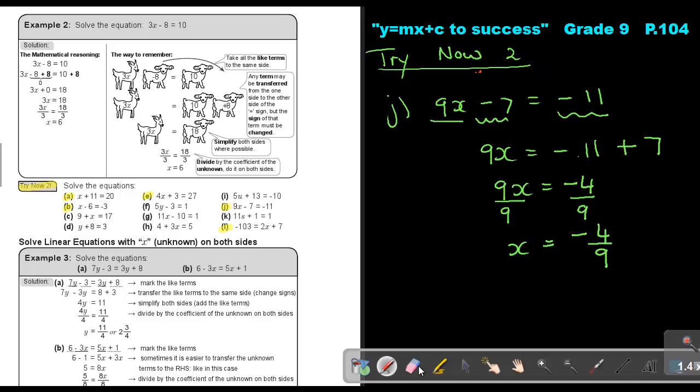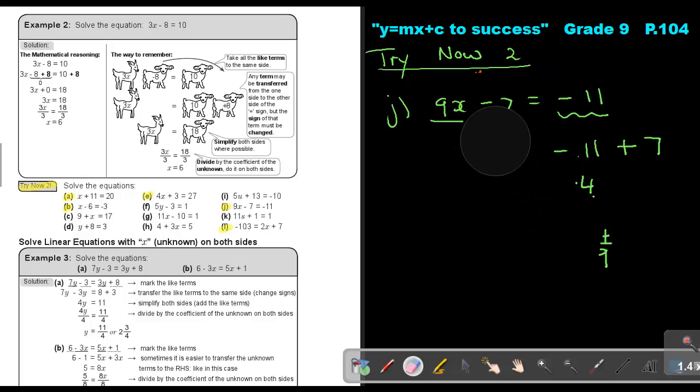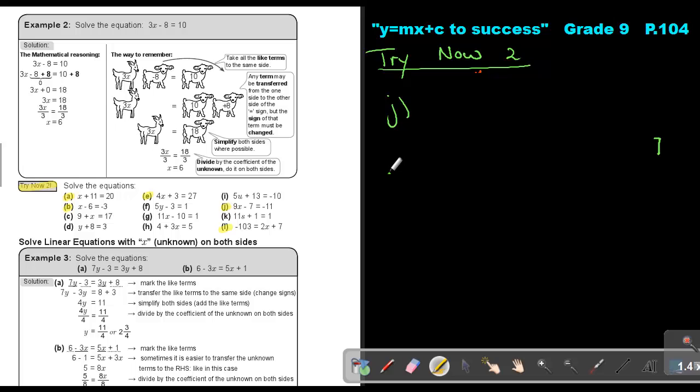And then the last one. Let's just do the last one. Number L. Number L. So it's minus 103 equals 2X plus 7. So just remember with this one that you can, the X can be on the other side. So if I look at that one, I can work on this side. You can do it one of two ways. So I'm basically just going to say this is 2X. This is negative 7. So this one can just go over to this side. So I have minus 103 minus 7 equals 2X.